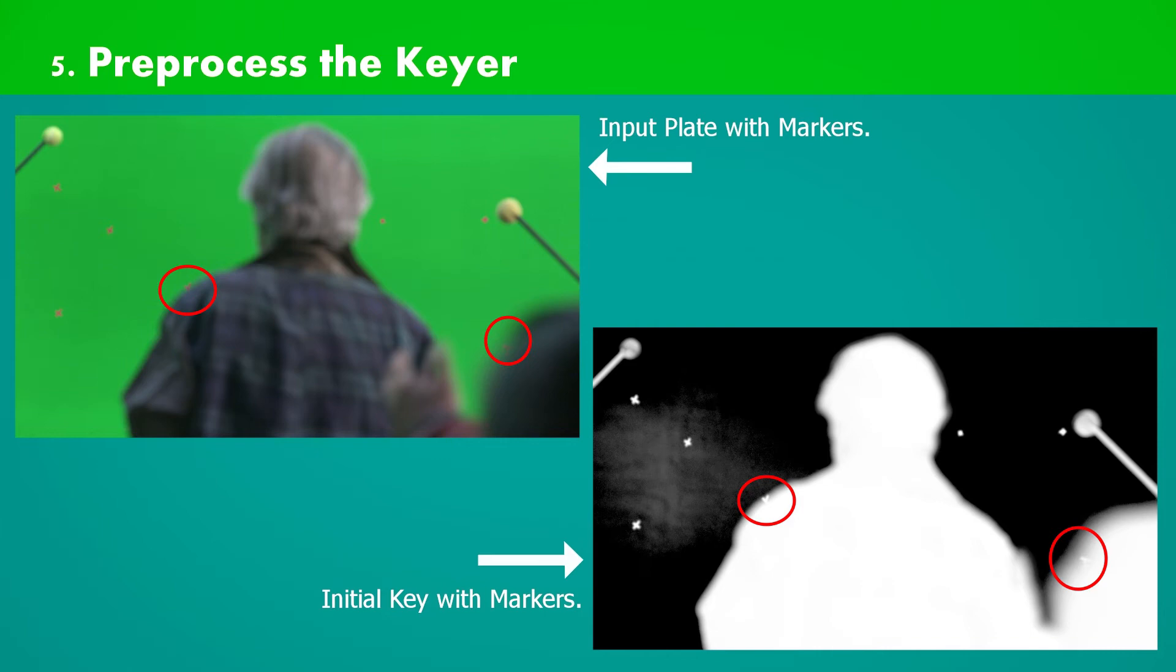In VFX production environment we care about time, and time is money. Painting on single image can be okay but painting on sequence or shot might lead to flickering, especially when we play at 24fps. Of course we don't want that.